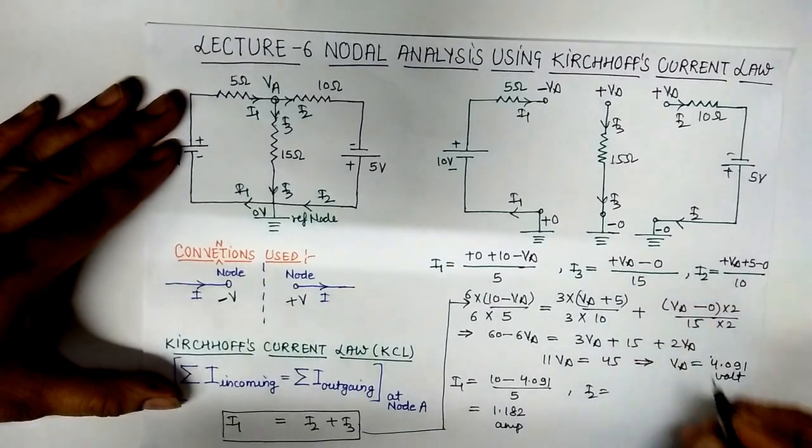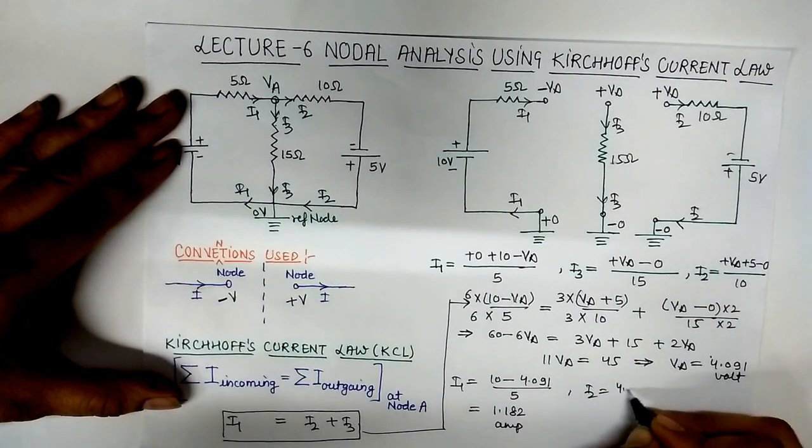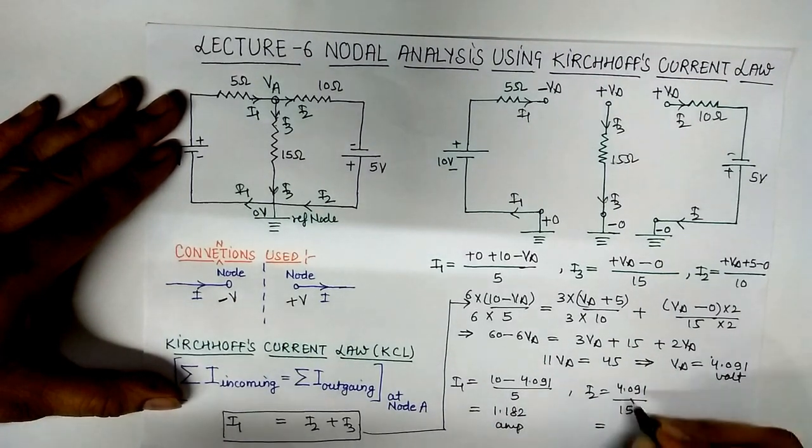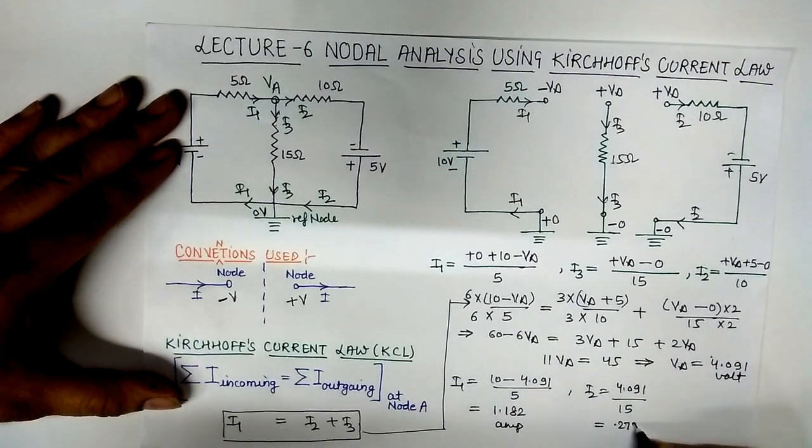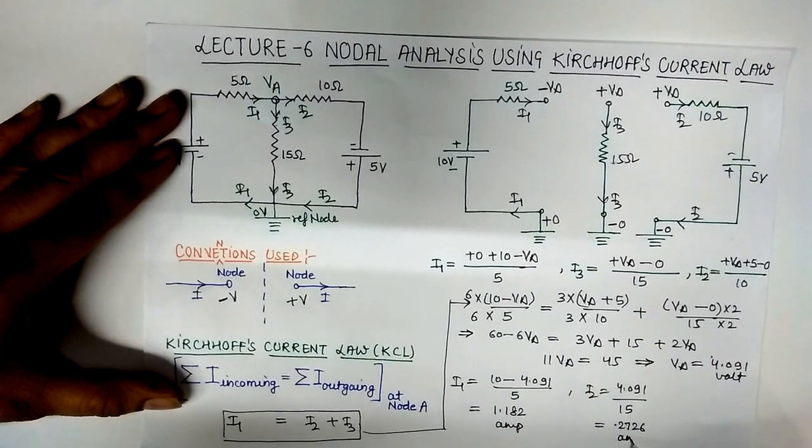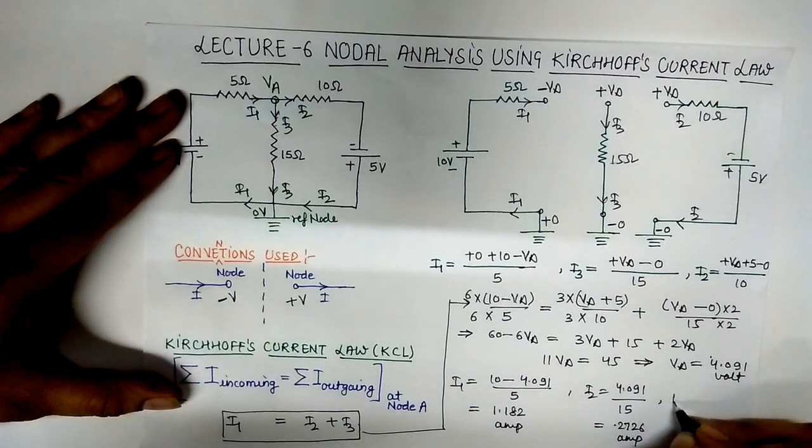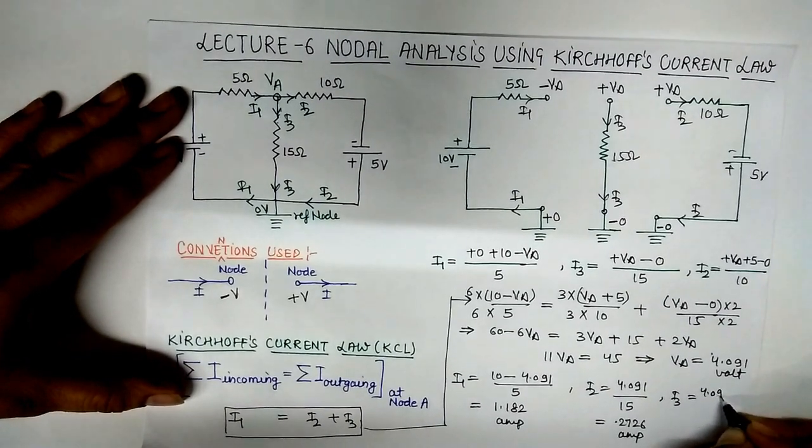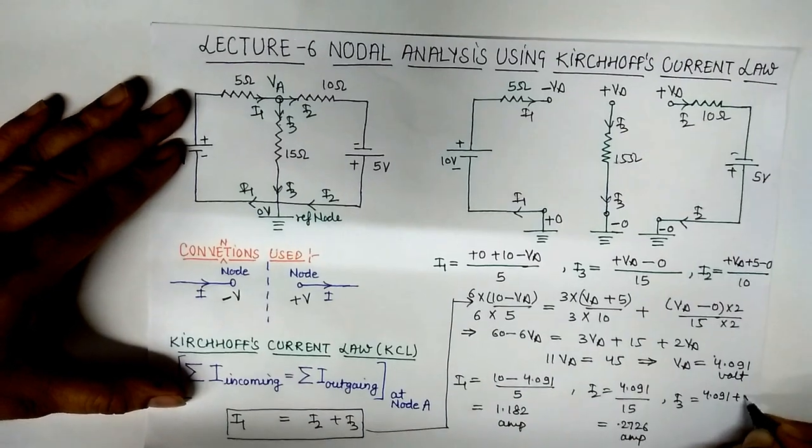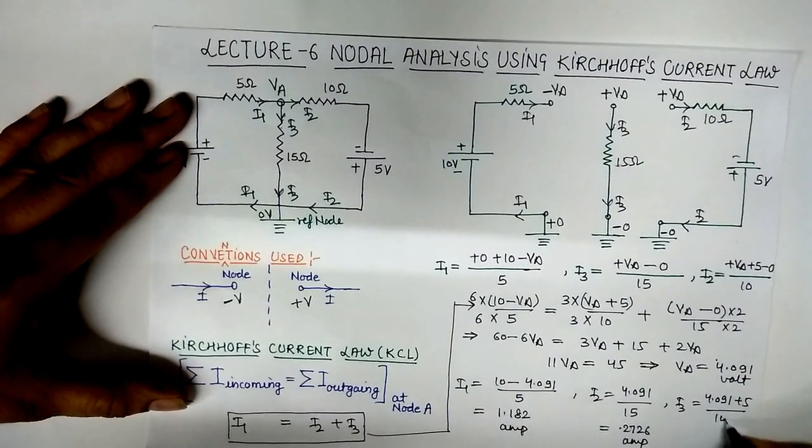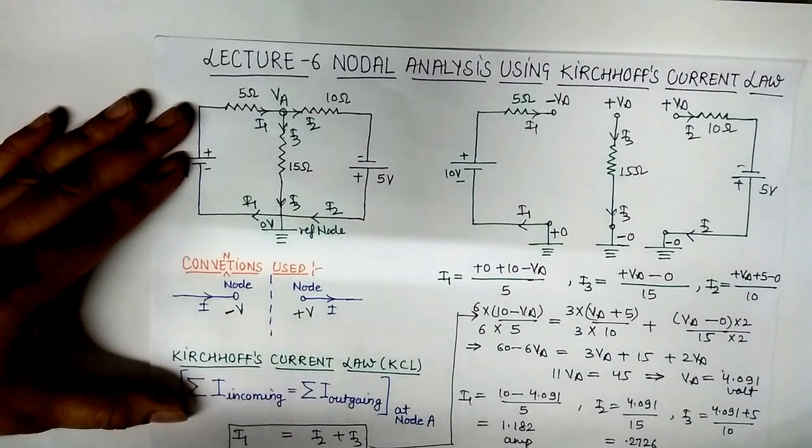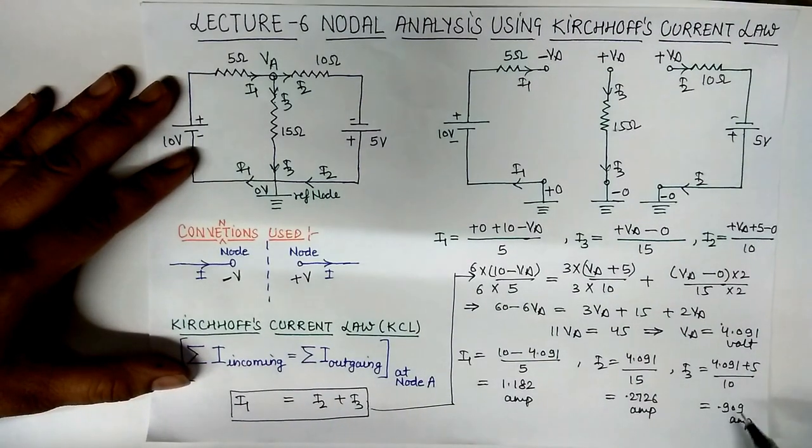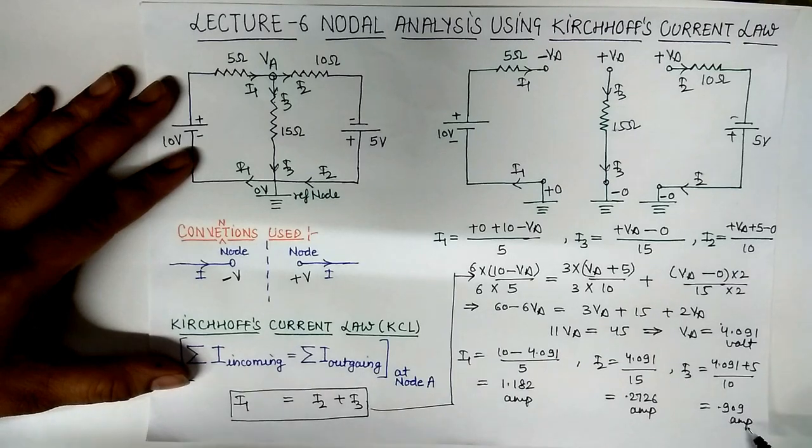For I2, put here 4.091 upon 15. It would be 0.2726 ampere using calculator. And for I3, put here 4.091 plus 5 upon 10. It would be 0.90. So after solving this, it would be 0.909 ampere.